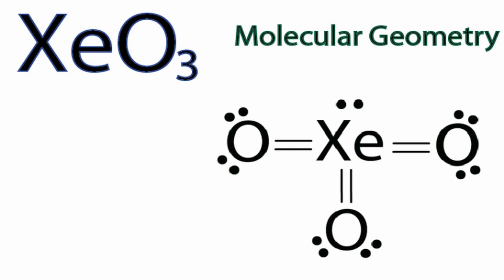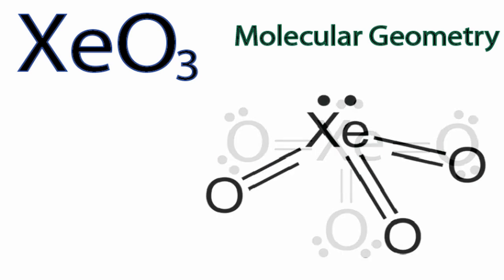Because of that, we're going to end up with a structure that will look something like this. You can see that the oxygens are on the bottom, they're spread out, and then we have that lone pair of electrons on the top. So this gives us an idea of the molecular geometry or shape of XeO3.